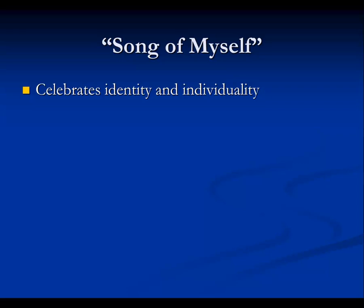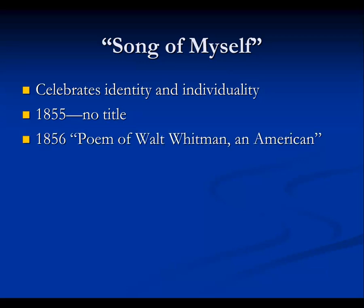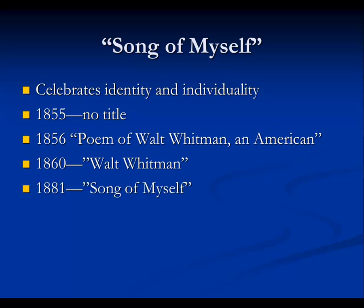Whitman rejected established poetic forms and embraced free verse — writing in the conversational language of ordinary people, much as Wordsworth advocated, rather than in the heroic couplets of the 18th-century Augustans. He celebrated the mystical, divine potential of individuals. One of his most famous poems is 'Song of Myself,' which celebrates identity and individuality. First published in 1855 with no title, it went through several names before becoming 'Song of Myself' in 1881. After this presentation, please listen to 'Daffodils' by Wordsworth, 'Kubla Khan' by Coleridge, and 'Song of Myself' by Whitman.